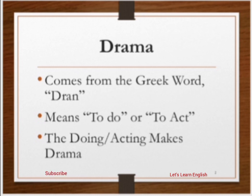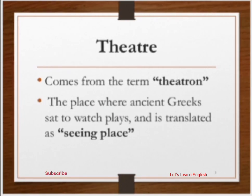اس کے بعد ہے تھیٹر — تھیٹر کہاں سے آیا ہے؟ It comes from the term 'theatron', the place where ancient Greeks sat to watch plays, and is translated as 'seen plays'. تھیٹر وہ جگہ ہے جہاں پر لوگ ڈراما یا play کو watch کرتے ہیں، دیکھتے ہیں — سو اسے ہم تھیٹر کہتے ہیں۔